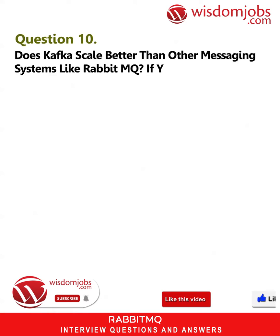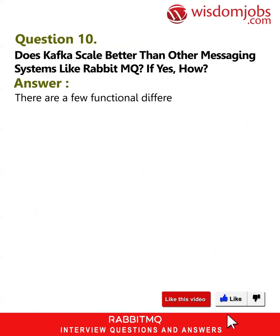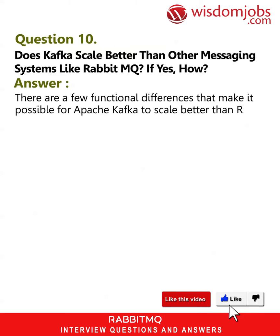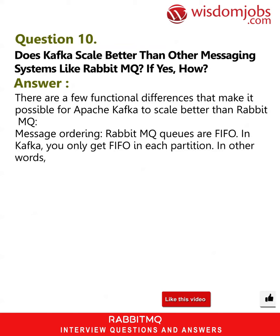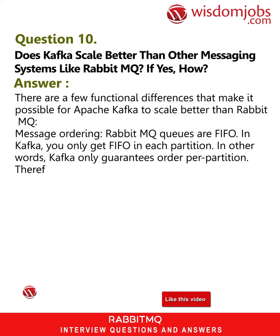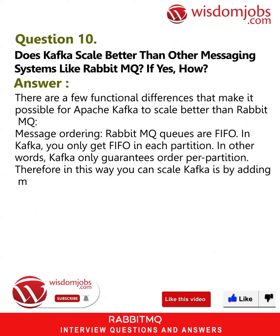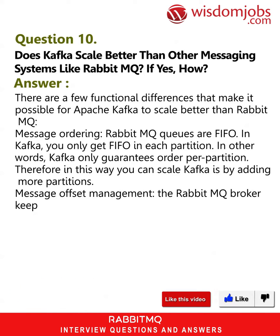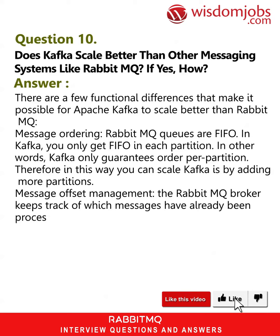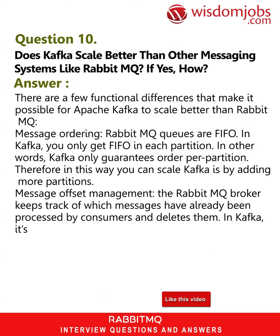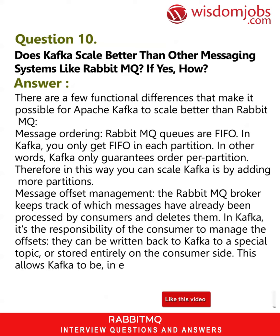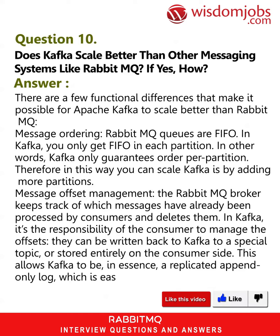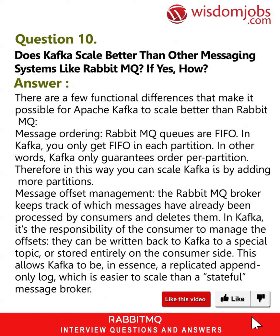Question 10: Does Kafka scale better than other messaging systems like RabbitMQ? If yes, how? Answer: There are a few functional differences that make it possible for Apache Kafka to scale better than RabbitMQ. Message ordering: RabbitMQ queues are FIFO, whereas in Kafka you only get FIFO ordering per partition — so you can scale Kafka by adding more partitions. Message offset management: the RabbitMQ broker keeps track of which messages have already been processed by consumers and deletes them. In Kafka, it is the responsibility of the consumer to manage offsets, which can be written back to Kafka or stored on the consumer side. This allows Kafka to be, in essence, a replicated append-only log, which is easier to scale than a stateful message broker.